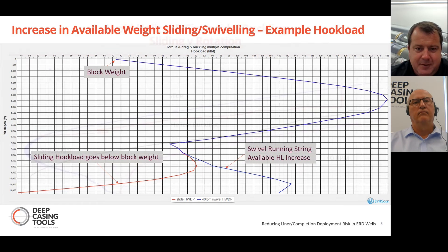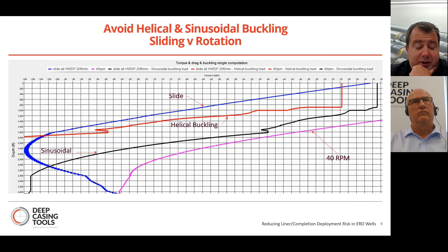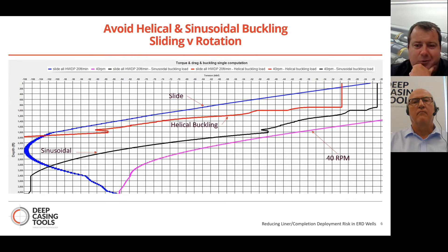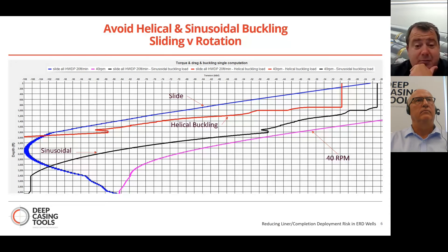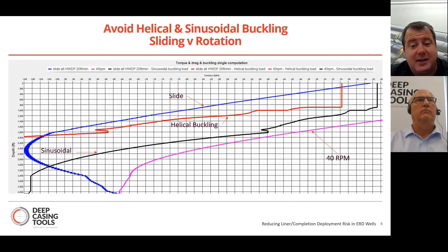Going hand in hand with high drag in ERD wells is the risk of helical buckling due to high drag and lack of available hook load. While sliding the drill pipe without rotating anything above, you're winding pipe into a big coil of helical buckling. By rotating the drill pipe above the screen section — the pink line shows 40 RPM as the optimum range — we've moved safely away from the buckling limit. We've mitigated against both losing available hook load and the helical buckling effect.